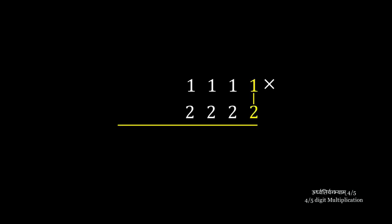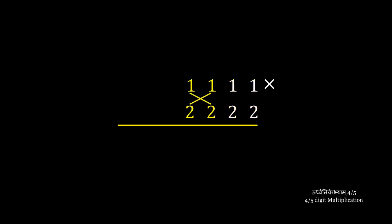As with three digits, the first pattern is a multiplication of the last two digits, the second is a cross-multiplication of the last two, and the third is a cross-multiplication of the last three digits. The fourth pattern is a cross-multiplication of all four digits, the fifth is a cross-multiplication of the first three digits, the sixth is a cross-multiplication of the first two, and the last pattern is a multiplication of the first digits.